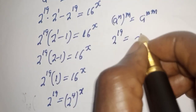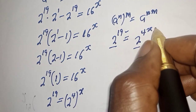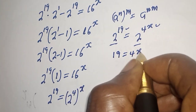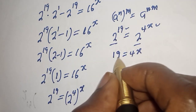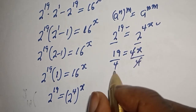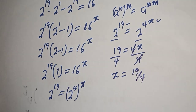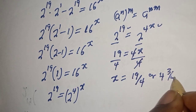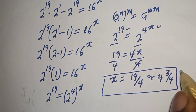Therefore 2 raised to power 19 is equal to 2 raised to power 4x. We have the same base 2, so we work with the exponents: 19 is equal to 4x. Dividing both sides by 4, x is equal to 19 over 4, or 4 and 3 over 4. This is the final answer.